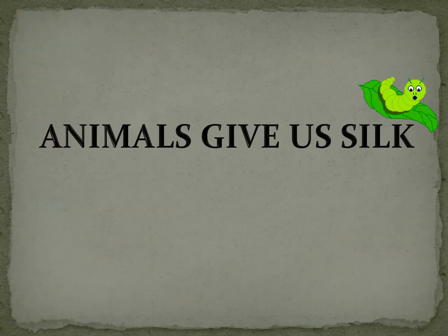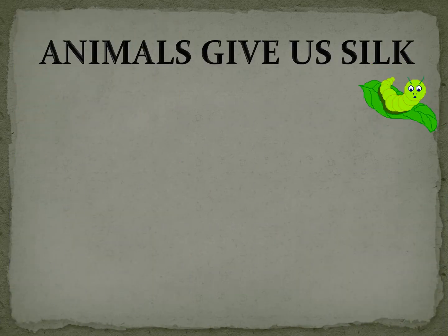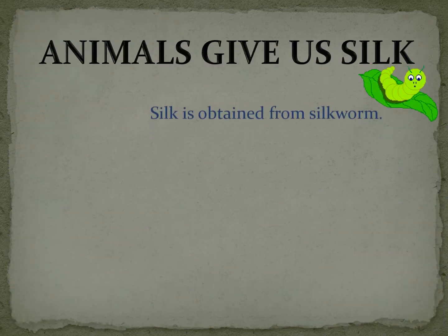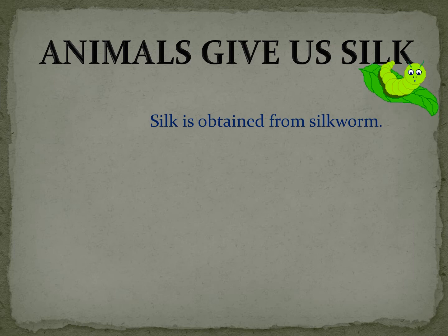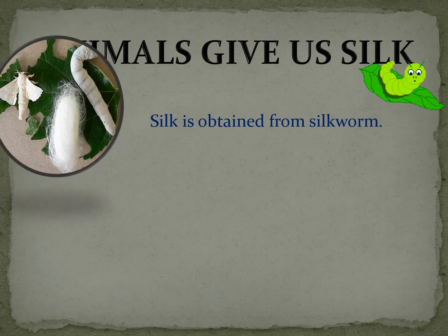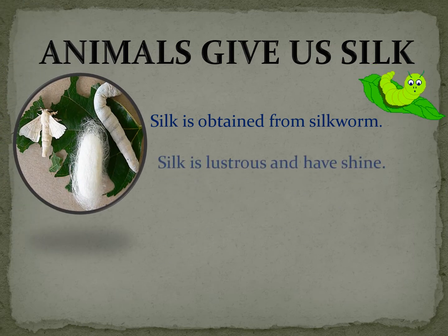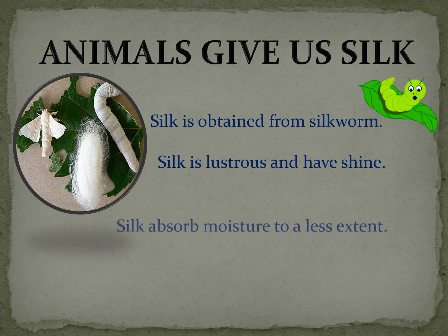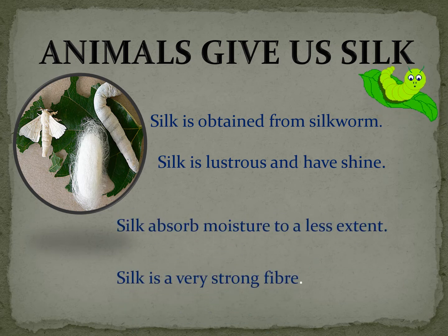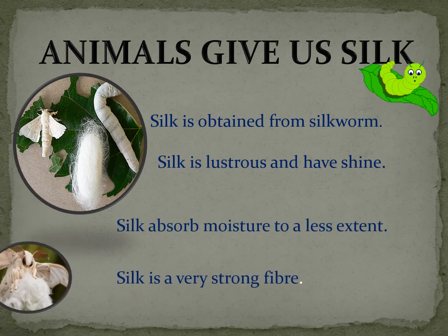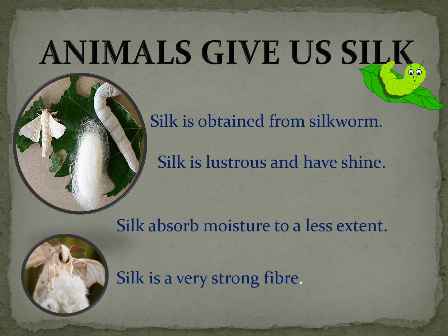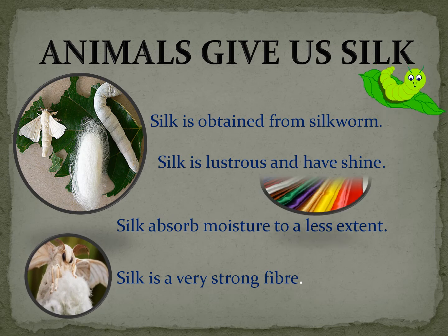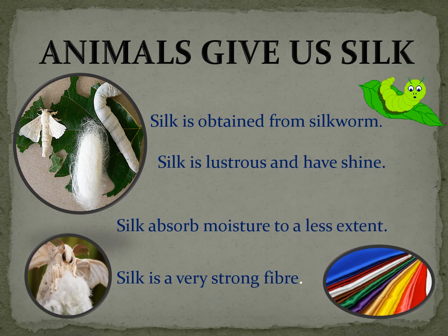Now next we will see animals that give us silk. Silk is obtained from silkworm. Silk is luxurious and has shine. Silk absorbs moisture to a lesser content. Silk is a very strong fiber.